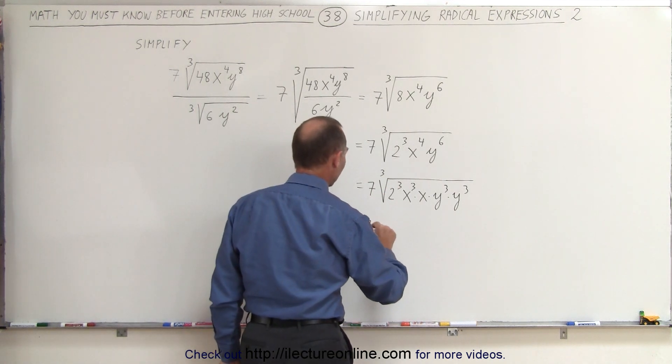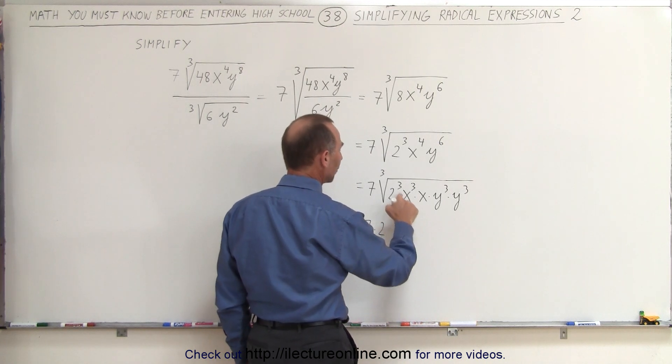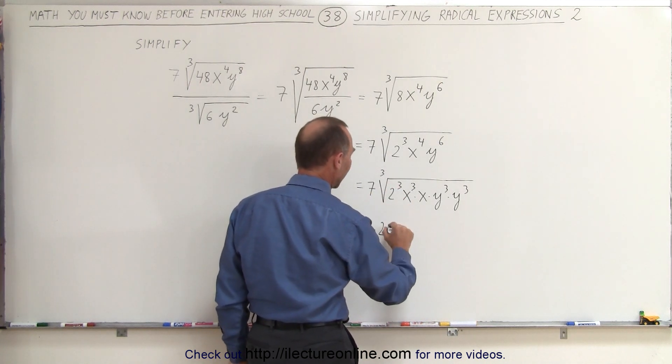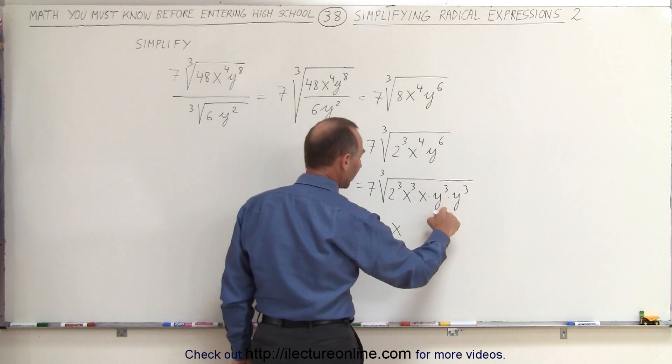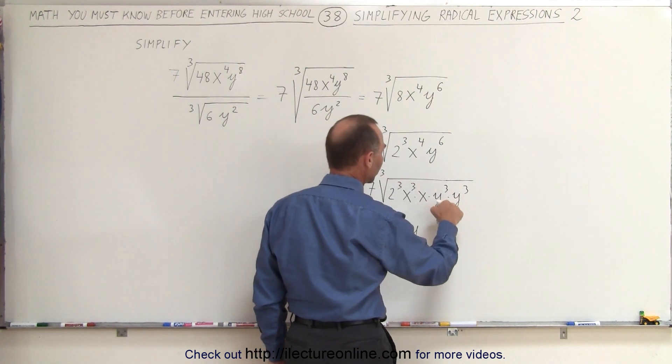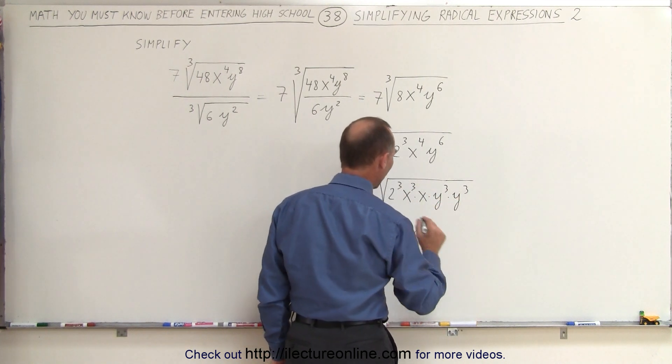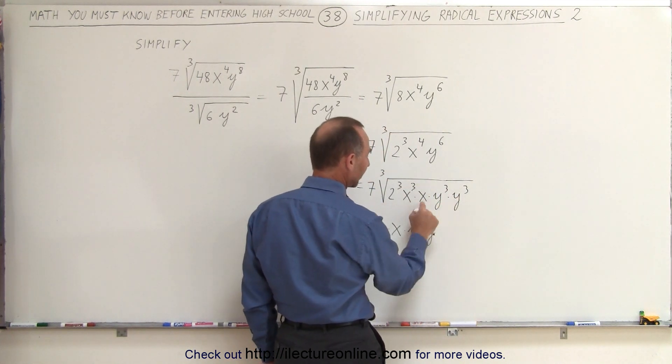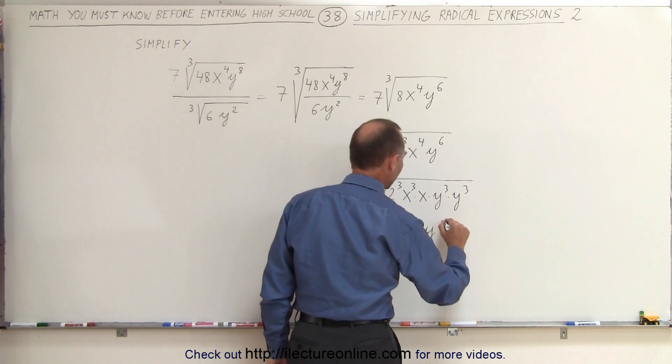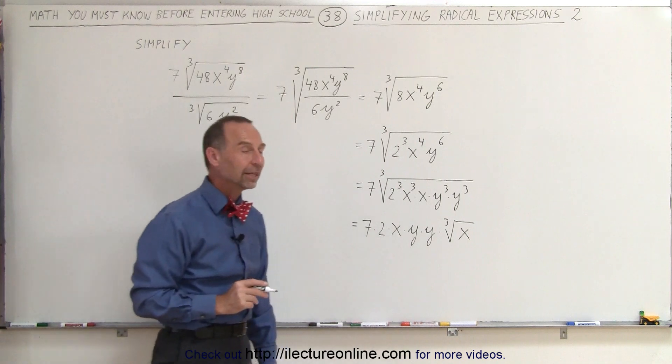So this can now be written as 7 times—pull out the 2, pull out an x cubed, because the cube root of x cubed is simply x, pull out one of the y's, and pull out this y, because the cube root of y cubed is y, and the cube root of this y cubed is y as well. All we have left when we pull these out is times the cube root of x. That's the only one that remains underneath the radical.